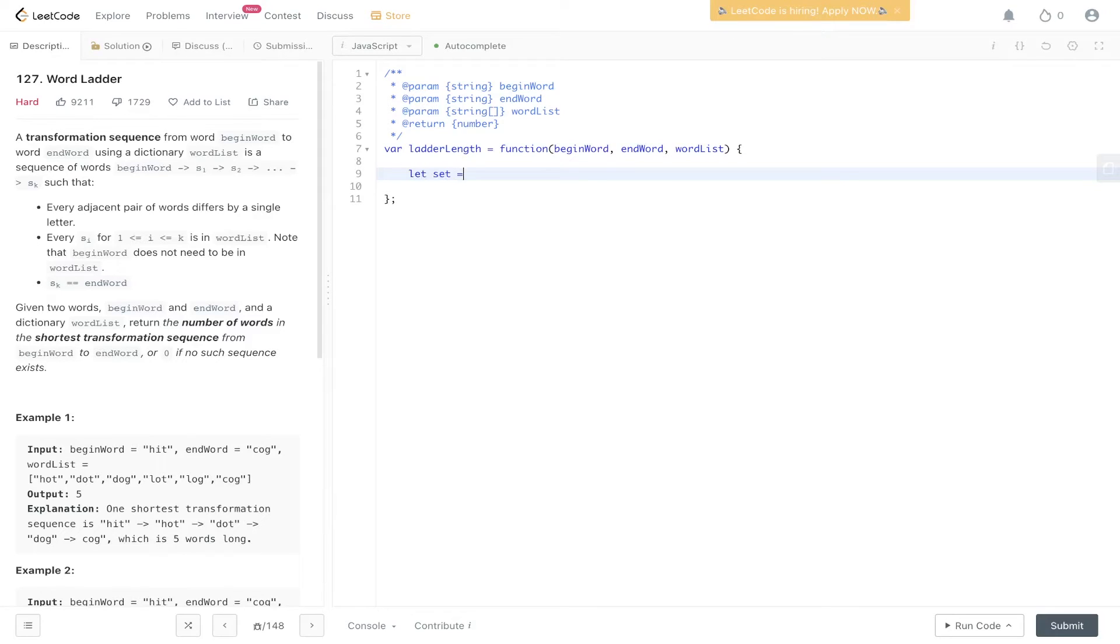When coding this out we'll have a set. Pass in words list so that we can look up in O(1) time. We're going to have a queue which is going to contain begin word and one. And then we can carry out breadth first search. So while queue dot length, we shift off of queue the current word and count. So let current word count equal queue dot shift.